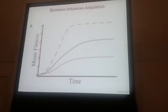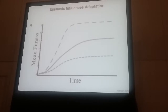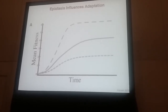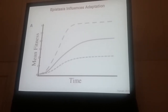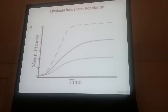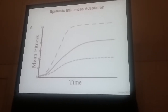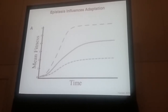Why we care about this is because how beneficial mutations interact can influence how a population adapts on this adaptive landscape. If we have the solid line here — time and fitness — the solid line represents no epistasis, so the additive or multiplicative case depending on the model you use. If there's negative epistasis between beneficial mutations, the population could adapt to a lower fitness peak. And if you have positive epistasis, you get those additional beneficial effects and can adapt to a higher peak.